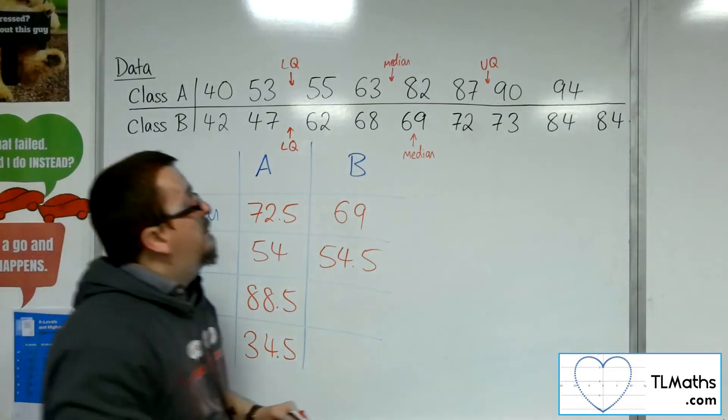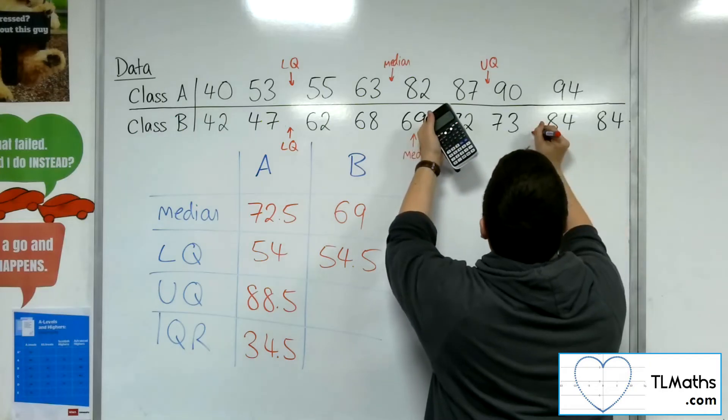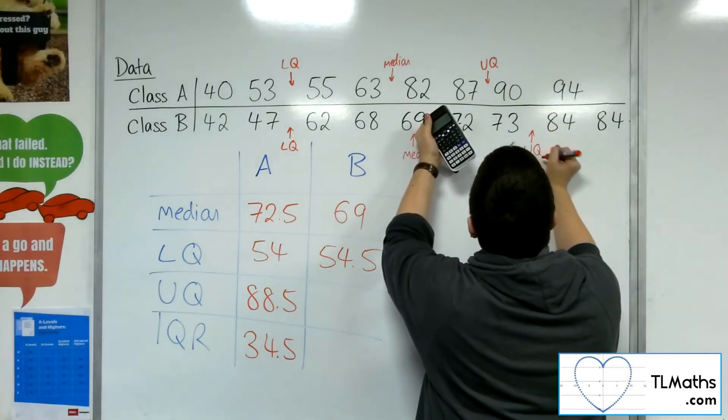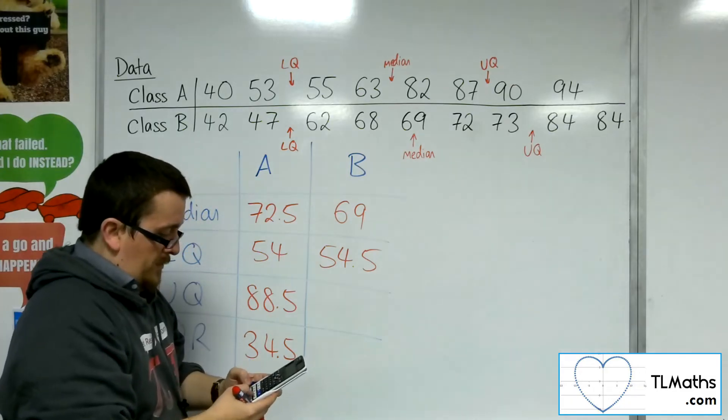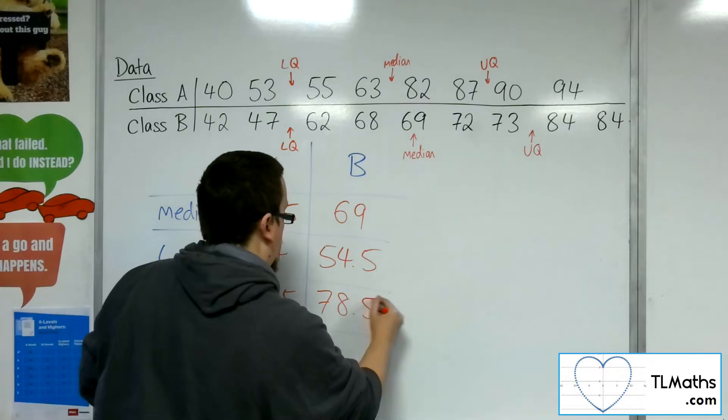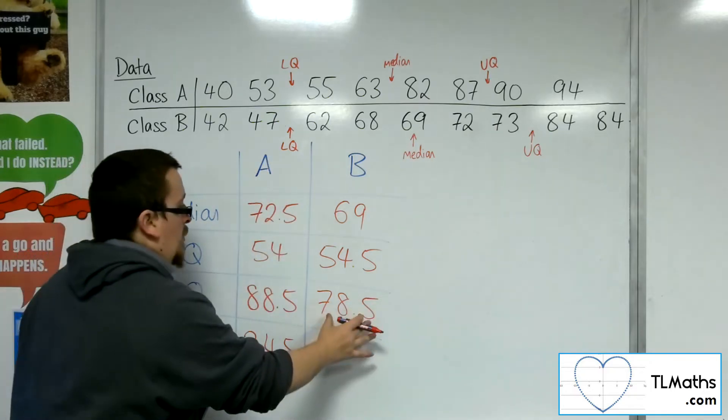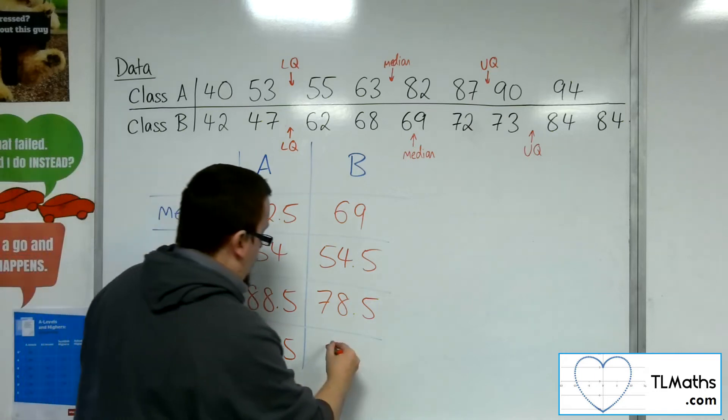The upper quartile is the median of the top half, excluding the median. So the upper quartile is halfway between 73 and 84. 73 plus 84 divided by 2 is 78.5. So if we do the upper quartile take away the lower quartile, we get 24.